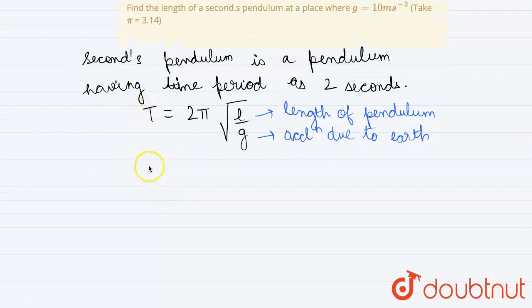Now, T we have 2 seconds equals to 2 times π root over l by the value of g is given as 10 in the question.